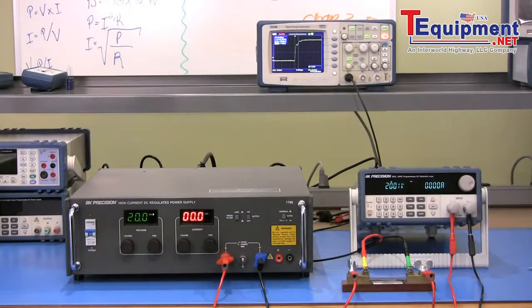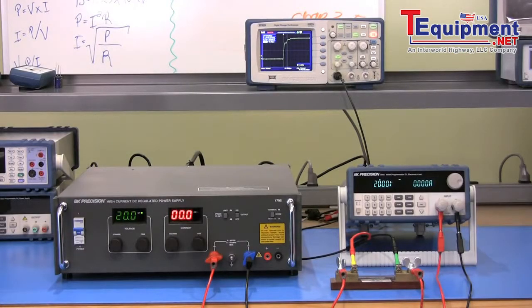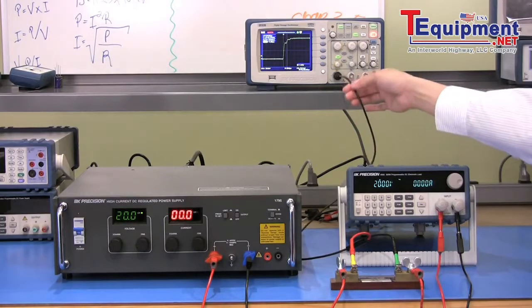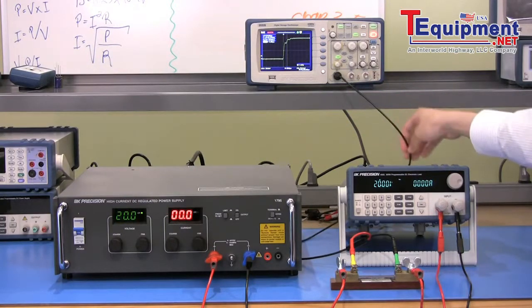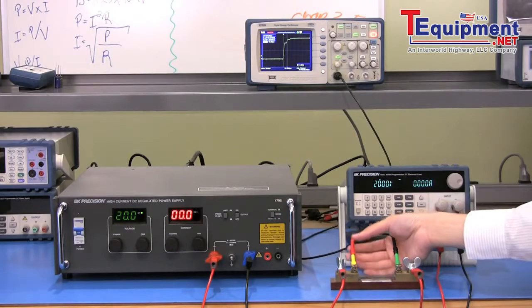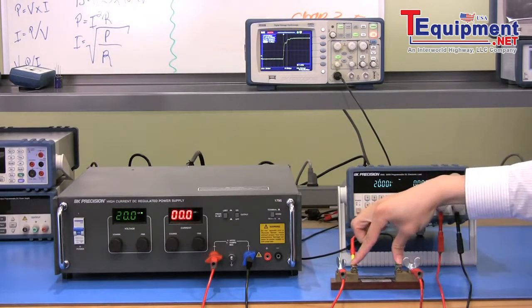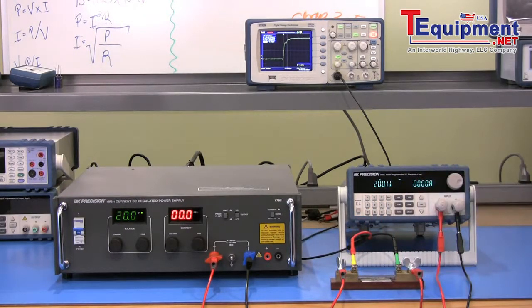For demonstration, I have a setup here to measure slew rate of a BK Precision 8502 DC electronic load. Here, I have a BNC to banana plugs cable connected to a DSO, with the banana plugs connected to a shunt resistor rated for approximately 66 milli-ohms, 15 amps.